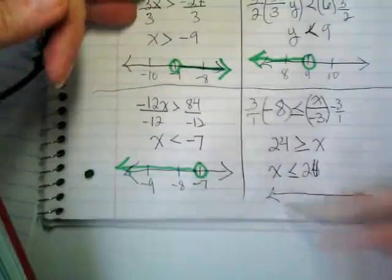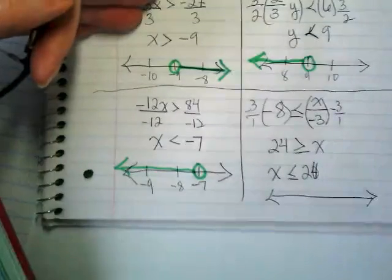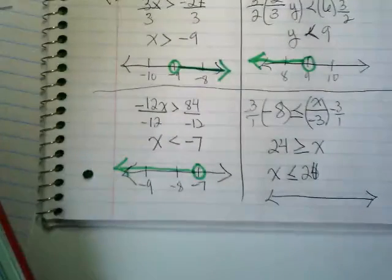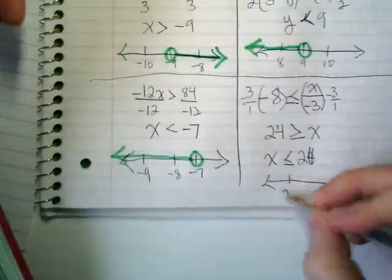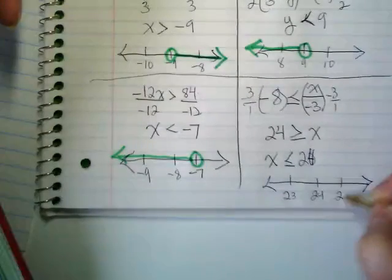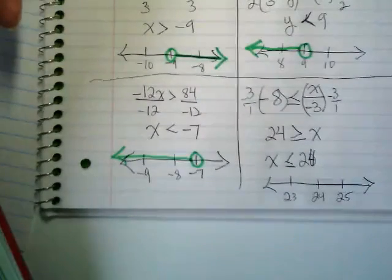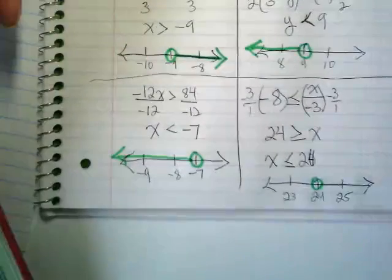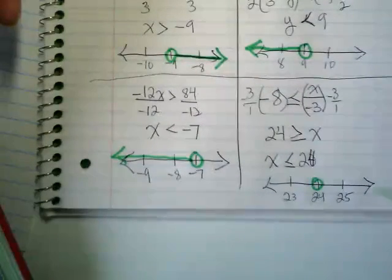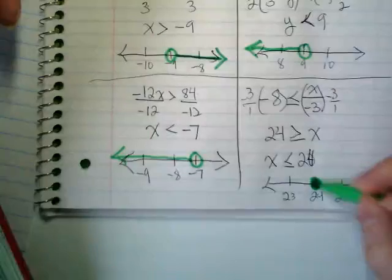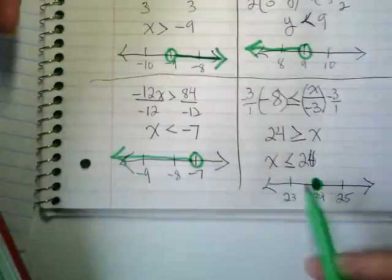Again, can you imagine if you had to make a number line from 0 to 24? You'd be here all day. All we need is 23, 24, 25. We're going to circle the 24. Open or closed? Close. Finally, we get a closed circle, and it's going to the left.